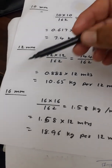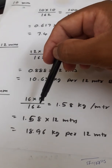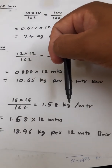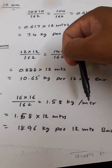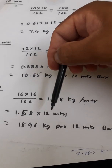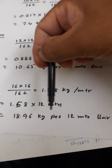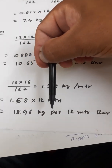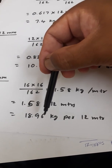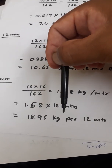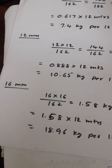For 16mm, it is 16 × 16 divided by 162, giving about 1.58 kg per meter. Multiplying 1.58 kg by 12 meters gives 18.96 kg per bar — about 19 kg per bar. The number of 16mm bars multiplied by 18.96 kg gives the total weight.